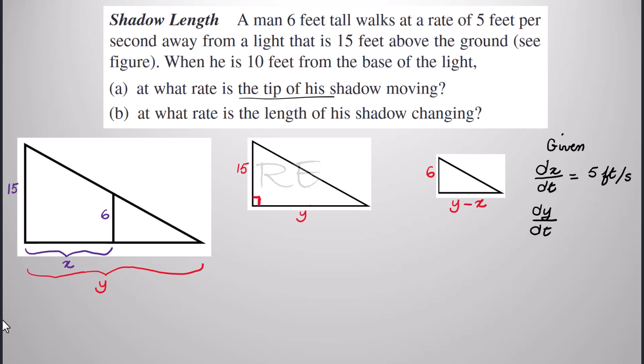What we want for part A is dy/dt, the rate of movement of the tip of his shadow. Using similar triangles, we say the lamp post height 15 is to y, the larger distance, as the height of the man 6 is to y minus x, the distance from the man to the tip of the shadow. Both right triangles are similar.